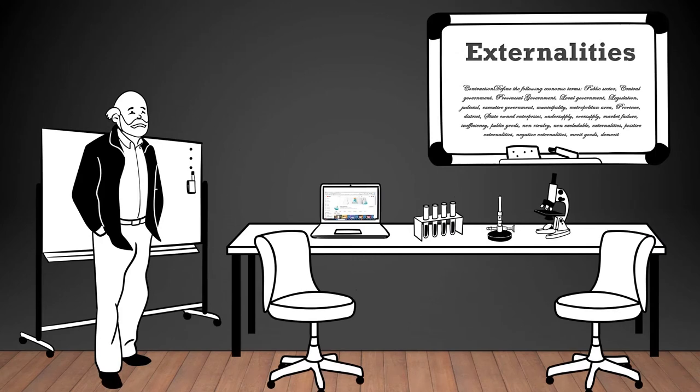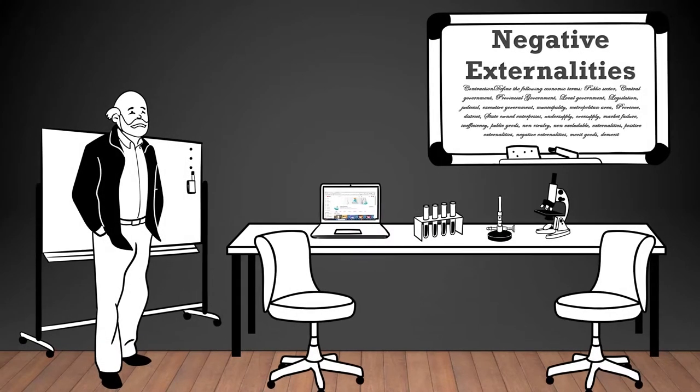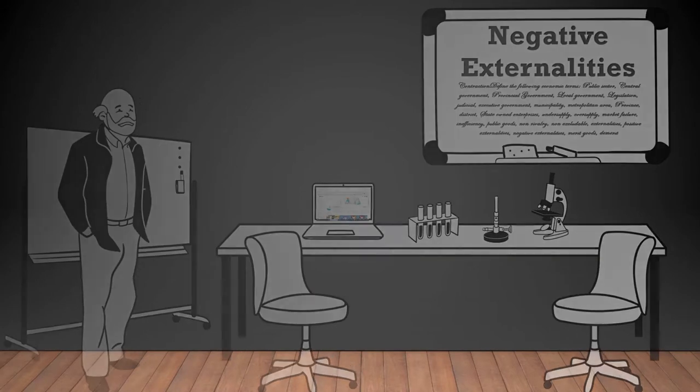Externalities: the positive or negative effects of economic activities on third parties who are not directly involved in those activities. Positive externalities: benefits arising from economic activities that spill over to third parties, leading to benefits not accounted for in the market. Negative externalities: costs imposed on third parties due to economic activities which are not fully accounted for in the market.